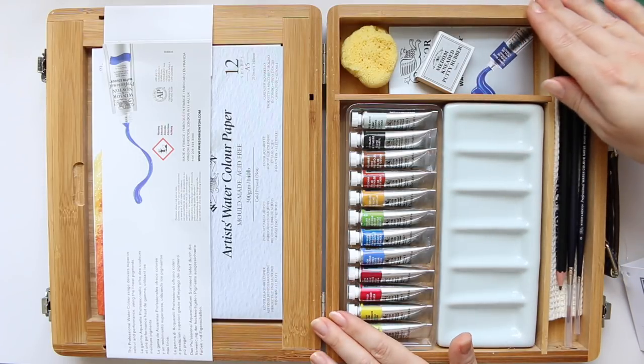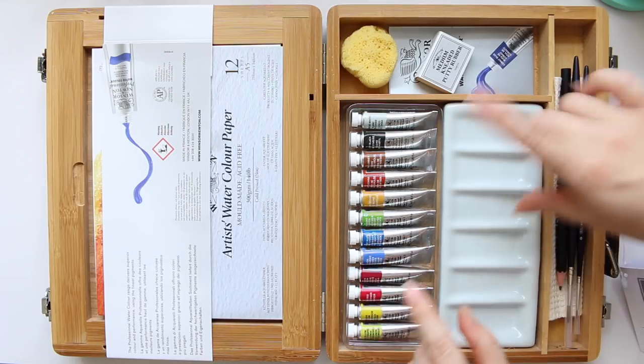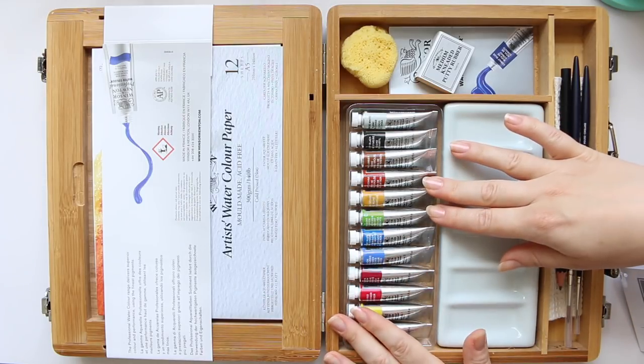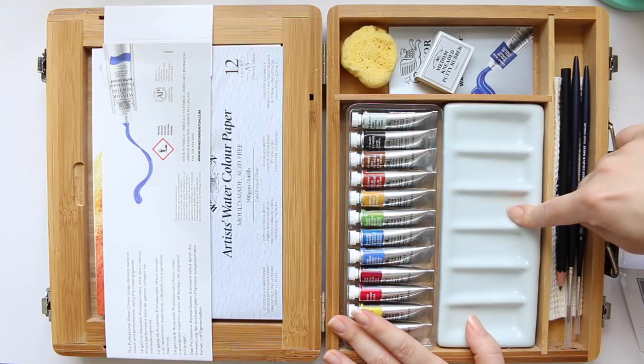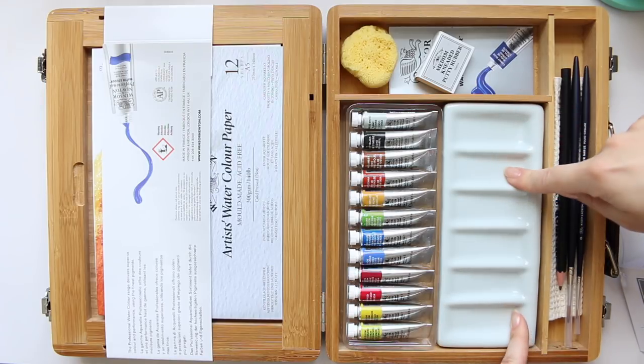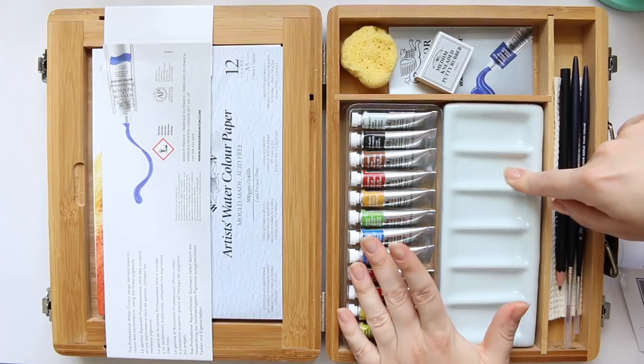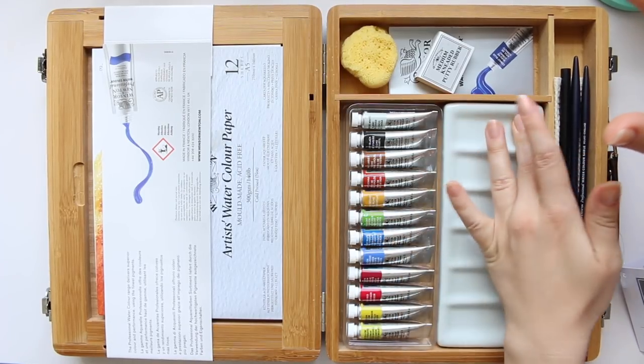There is another set which I believe looks slightly different. It has some, I think half pans if I'm not mistaken, and instead of the ceramic tray you get something else. But I particularly wanted the ceramic tray and tubes just because I feel it is really what a professional watercolor set you know should have and what I enjoy using.